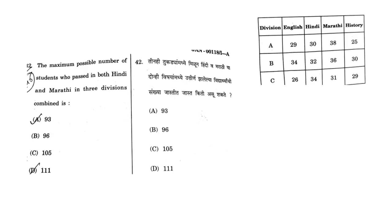Moving on to the next question: the maximum possible number of students who passed both Hindi and Marathi in three divisions combined. Here you have to use the same logic. For Hindi: in A division it is 30, in B division it is 32, and in C division it is 31. So if you add up these three numbers: 30 plus 32 is 62, plus 31 is 93. So option A is the correct answer here.